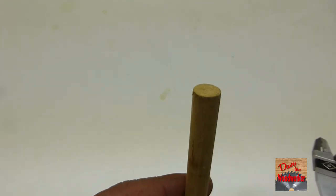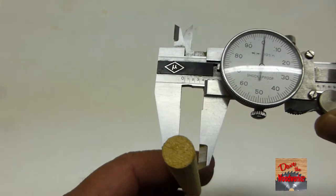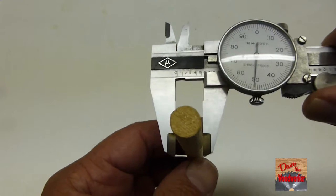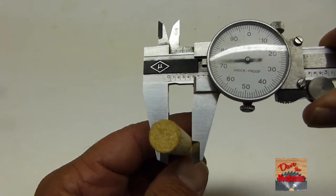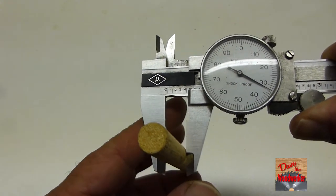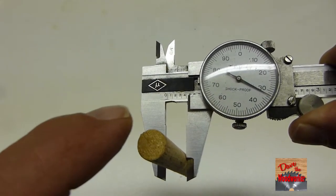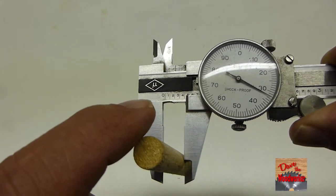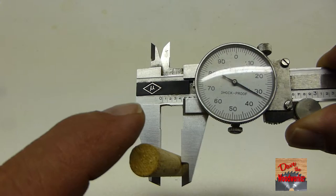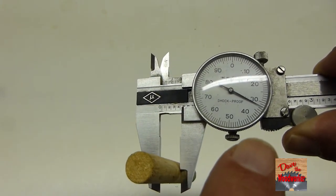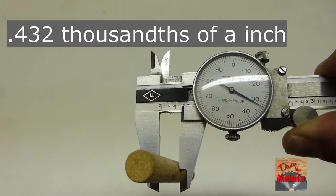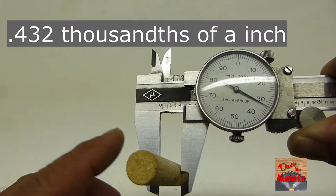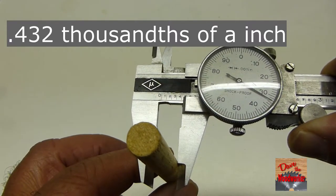Let's say we're going to measure this dowel here. I'll open it up and I'll close it. And as you can see, you count the numbers over: one, two, three, four. So it's four hundred and thirty-two thousandths. So that's the diameter of this dowel here.